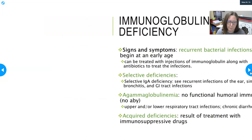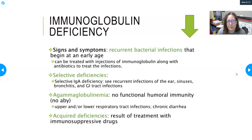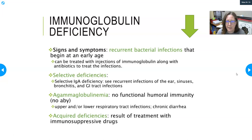Signs and symptoms of immunoglobulin deficiency include recurrent bacterial infections beginning at an early age. This can be treated with injections of immunoglobulin along with antibiotics. Selective deficiency means you're missing just one class — for example, selective IgA deficiency leads to recurrent infections in the ears, sinuses, bronchitis, and GI tract. Agammaglobulinemia means no antibodies are being produced at all — no functional humoral immunity — and the patient will have upper and lower respiratory tract infections and chronic diarrhea. Acquired deficiencies can result from treatment with immunosuppressive drugs, as seen in transplant patients.